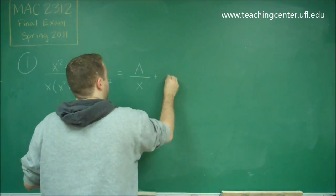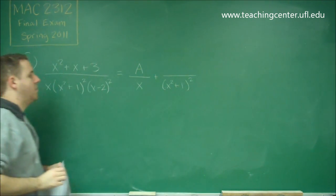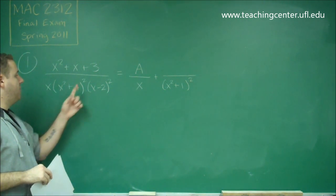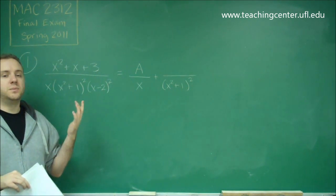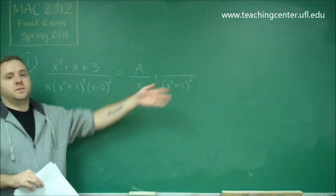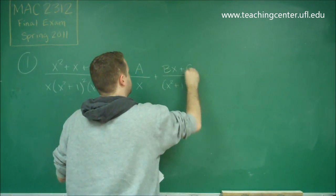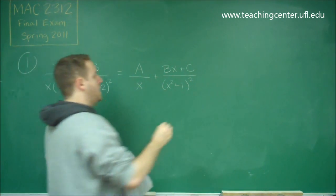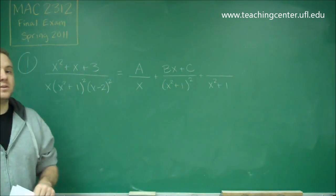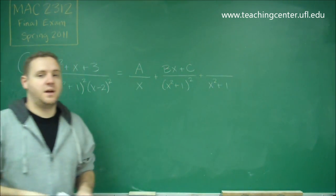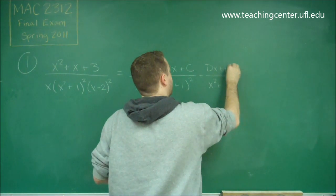The next factor is (x squared plus 1) squared. Remember that if you have a factor where the entire factor is raised to a power, you only look at the interior part to figure out what degree to put on the numerator. In this case the interior is degree 2, so we would have Bx plus C on our numerator. We also have to include a fraction with that same factor at single power, and that also has a numerator of degree 1, so we would have Dx plus E.